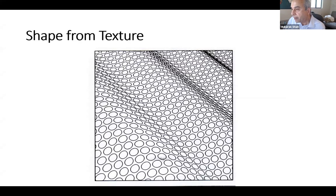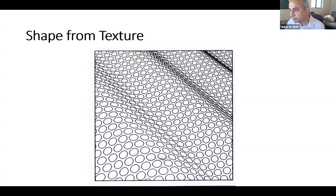Another way is shape from texture. Assume there is a sheet of paper with circles of the same radius, uniformly distributed. If you tilt this sheet of paper, the density of the circles will change depending on the orientation, and the circles will appear like ellipses. So you can recover the 3D orientation by looking at how the texture changes — how circles become ellipses and how the density changes.